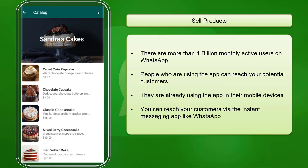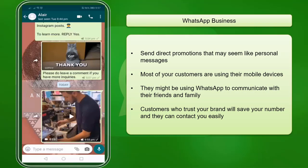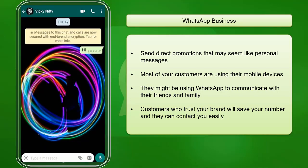There are more than 1 billion monthly active users on WhatsApp. Since people are already using the app, you can easily reach your potential customers via instant messaging. Businesses can benefit from WhatsApp Business since it can send direct promotions acting as personal messages to every contact in their list. People are using their mobile devices most of the time, so it is a good practice to use an instant messaging app to inform your contacts about your new products or new product stocks.